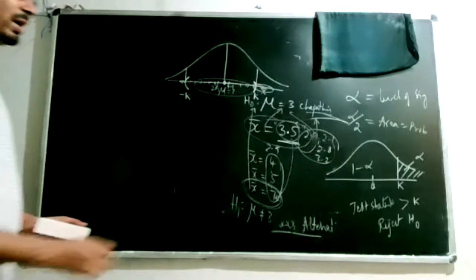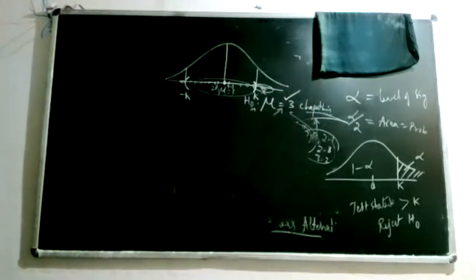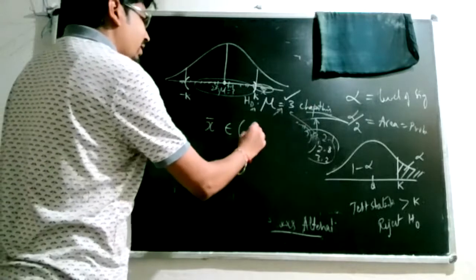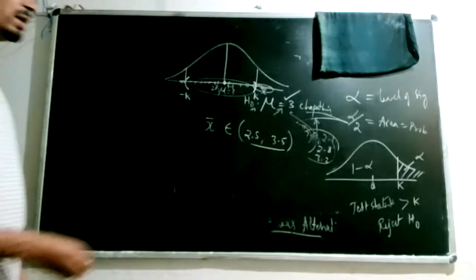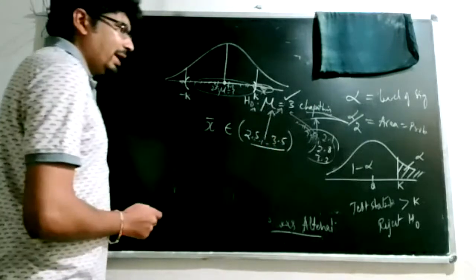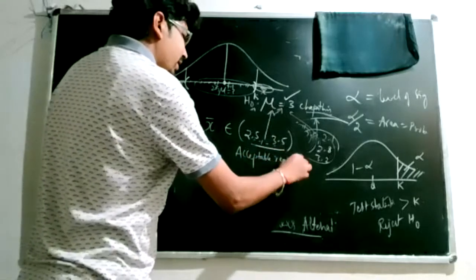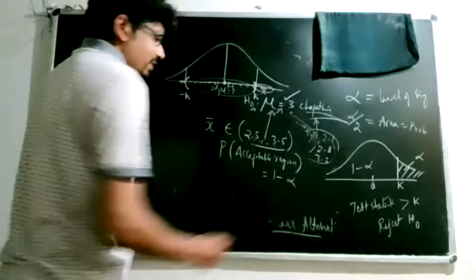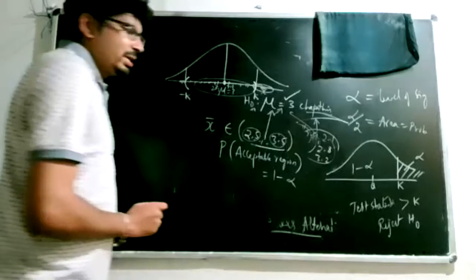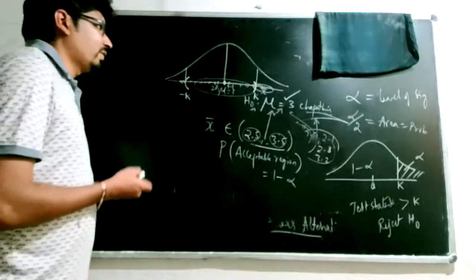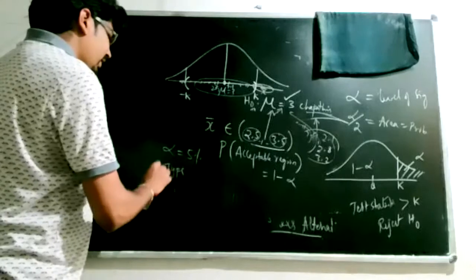We define an interval for x-bar: if mu is truly 3, we might observe x-bar from 2.5 to 3.5. All values in this range favor the null hypothesis, forming the acceptance region with area 1 minus alpha. The cutoff values 2.5 and 3.5 are based on the chosen alpha.